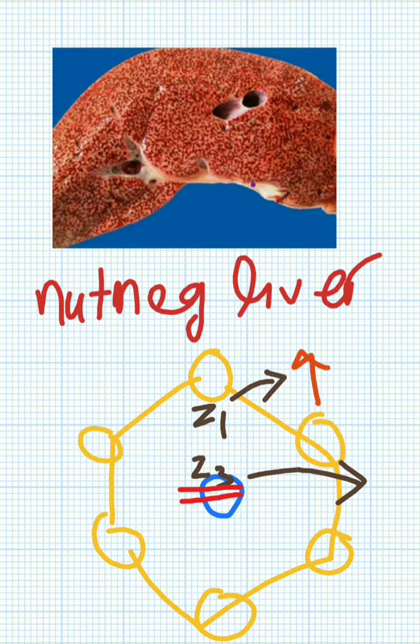Pericentral, you have another name also: centrilobular. Whenever you are getting some kind of congestion, ischemia first affects this pericentral region. What happens here? There will be congestion so that you get a lot of RBCs, because the blood flow is very less and blood is flowing slowly. The RBCs will be accumulating.